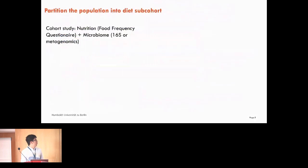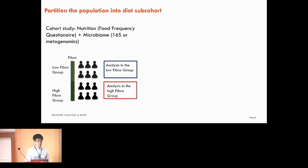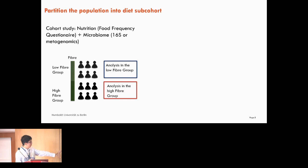For cohort studies, nutrition information is always obtained from food frequency questionnaires, and microbiome data from 16S or metagenomics data. These are observational studies rather than experiments. A lot of research follows a similar strategy: splitting the cohort based on diet intake. For example, using fiber as a split — the upper group has low fiber intake and the lower group has high fiber intake — and then doing analysis within each group.